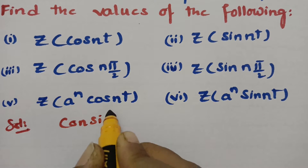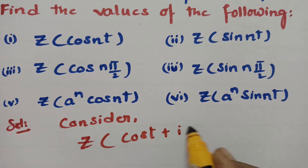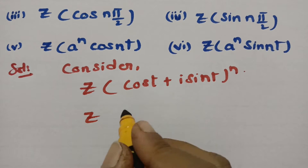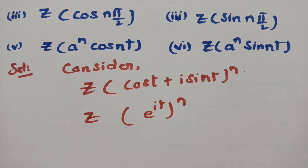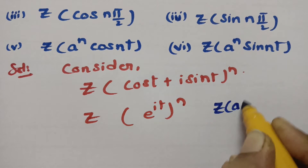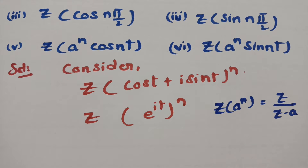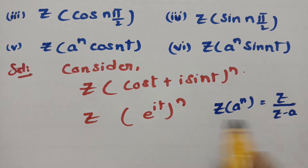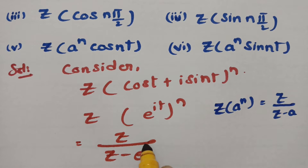Let's get started. First, consider Z of (cos(t) + i·sin(t))^n. As you know, cos(t) + i·sin(t) is nothing but e^(it). So according to Z transforms, we have Z of a^n equal to Z/(Z−a). In place of a, we have e^(it), so I am writing this as Z/(Z − e^(it)).